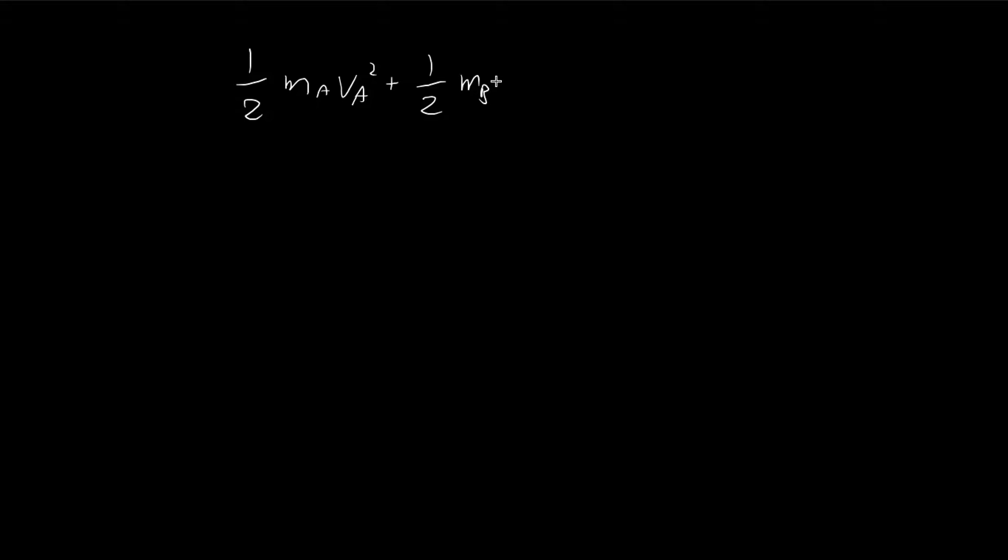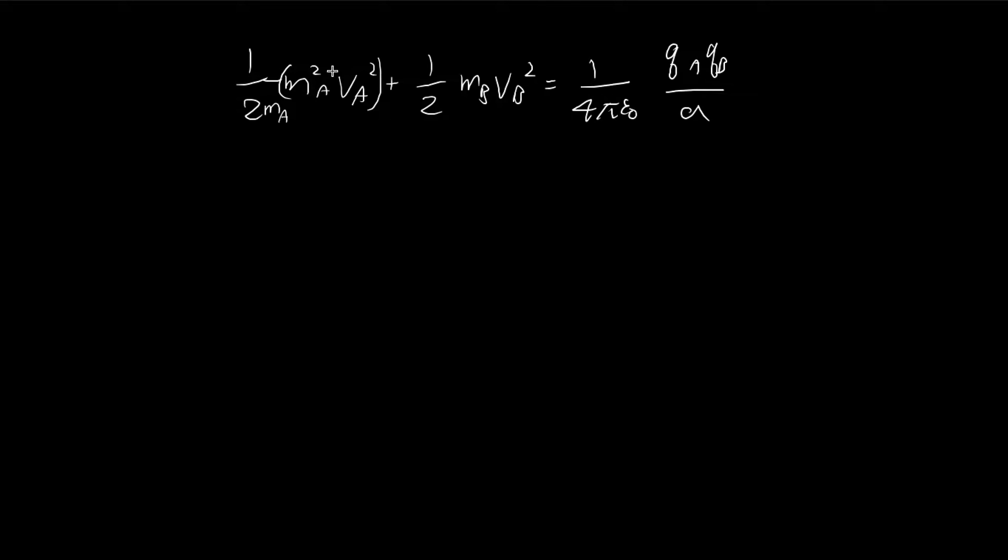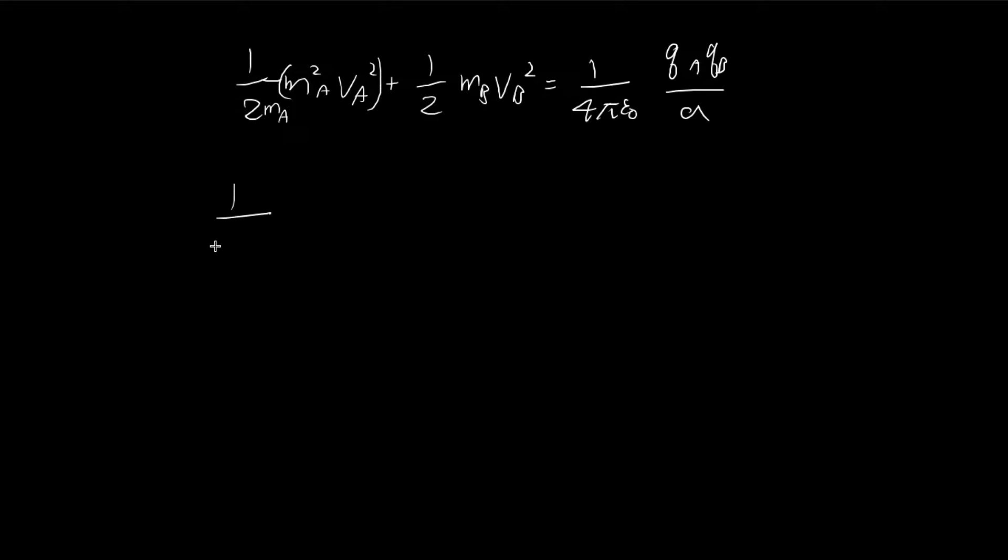So I'm going to start with this equation. Once again, this is equal to the electric potential energy they had before between them. And for this expression here, I'm going to multiply Ma and then divide it by Ma. The reason I do that is because the square of these two terms is just the square of Mb. So I can actually change this to Mb square Vb square plus one-half Mb Vb square.